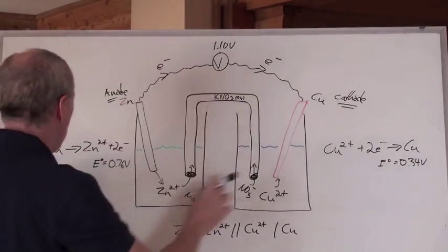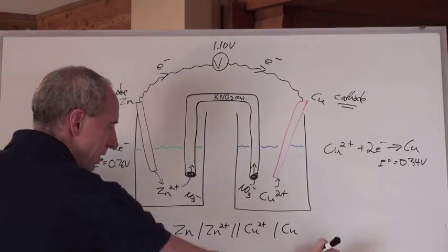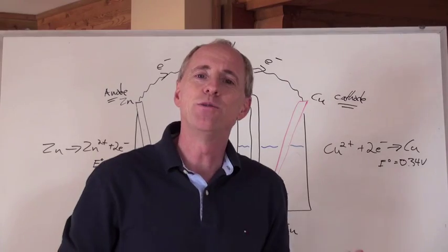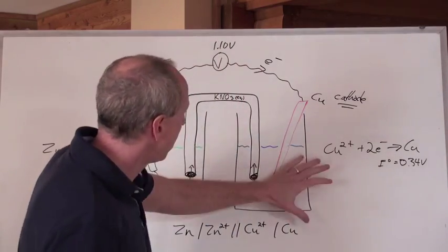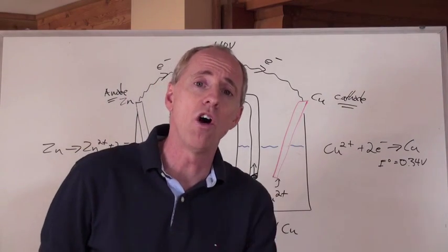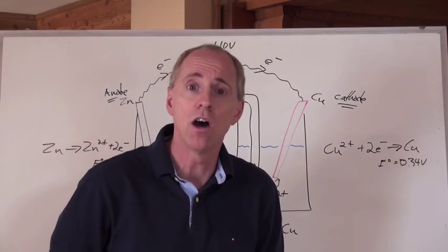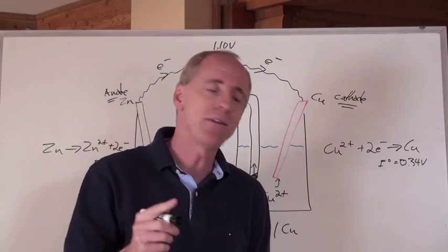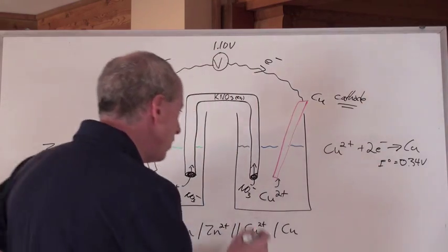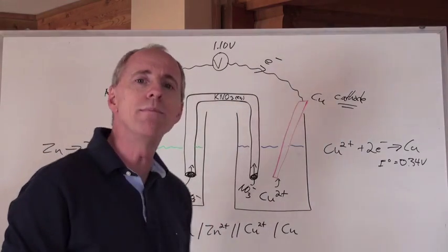Now the diagram is complete, except for maybe the net equation where you add this one to this one to get the net equation underneath. So this is how you set up a cell that is going to be spontaneous because all voltaic or galvanic cells are spontaneous. By the way, that naught again means standard conditions. So all of these solutions here have to be one mole per liter.